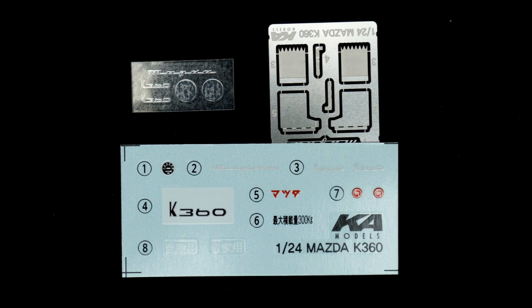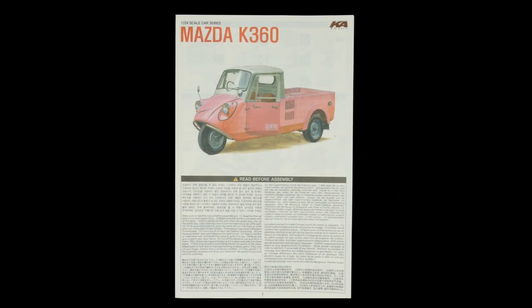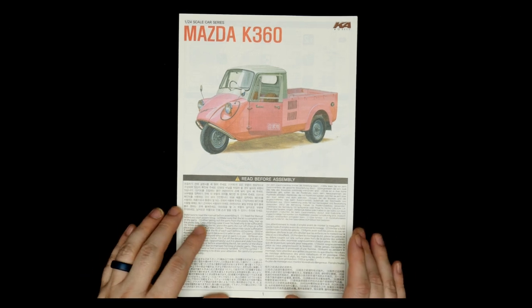Now some decal sheet, some photo etch, and some metal transfers. So that is going to do it for this. Let's look at the Mazda K360 kit from Ka models, K models, how I pronounce it.